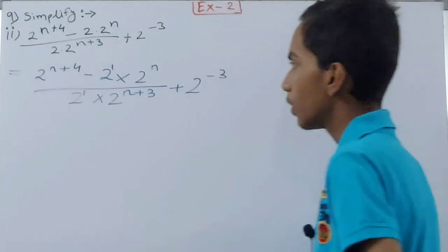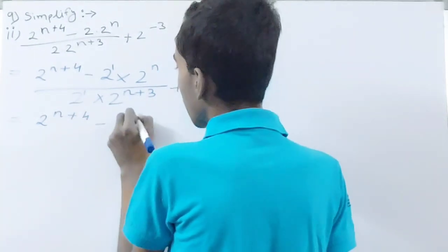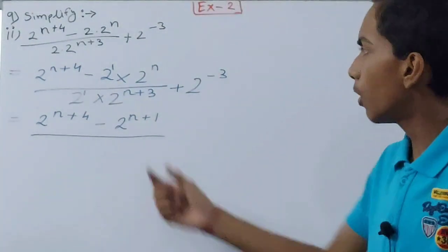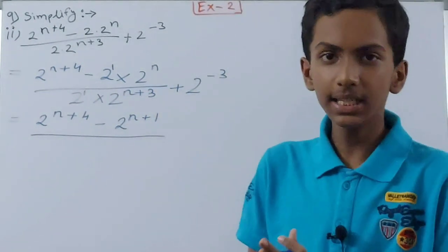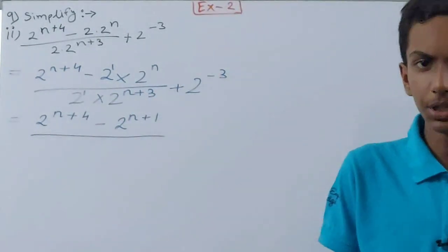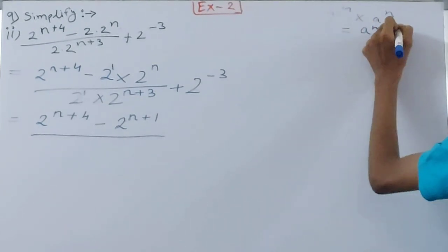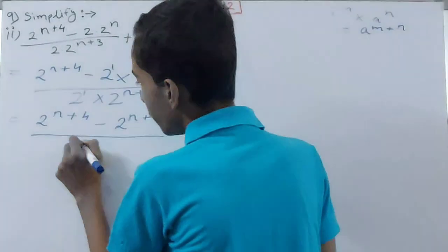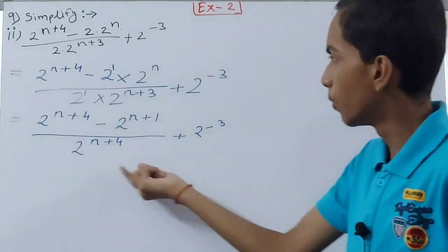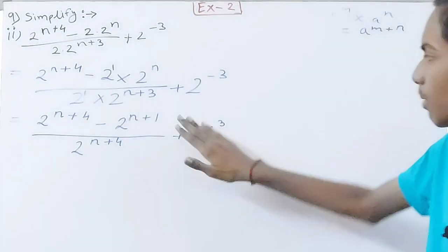When multiplying terms with the same base we add exponents: a^m × a^n = a^(m+n). So 2^1 × 2^(n+3) = 2^(n+4). The numerator is 2^(n+4) − 2^(n+1), and the denominator is 2^(n+4) + 2^(−3).